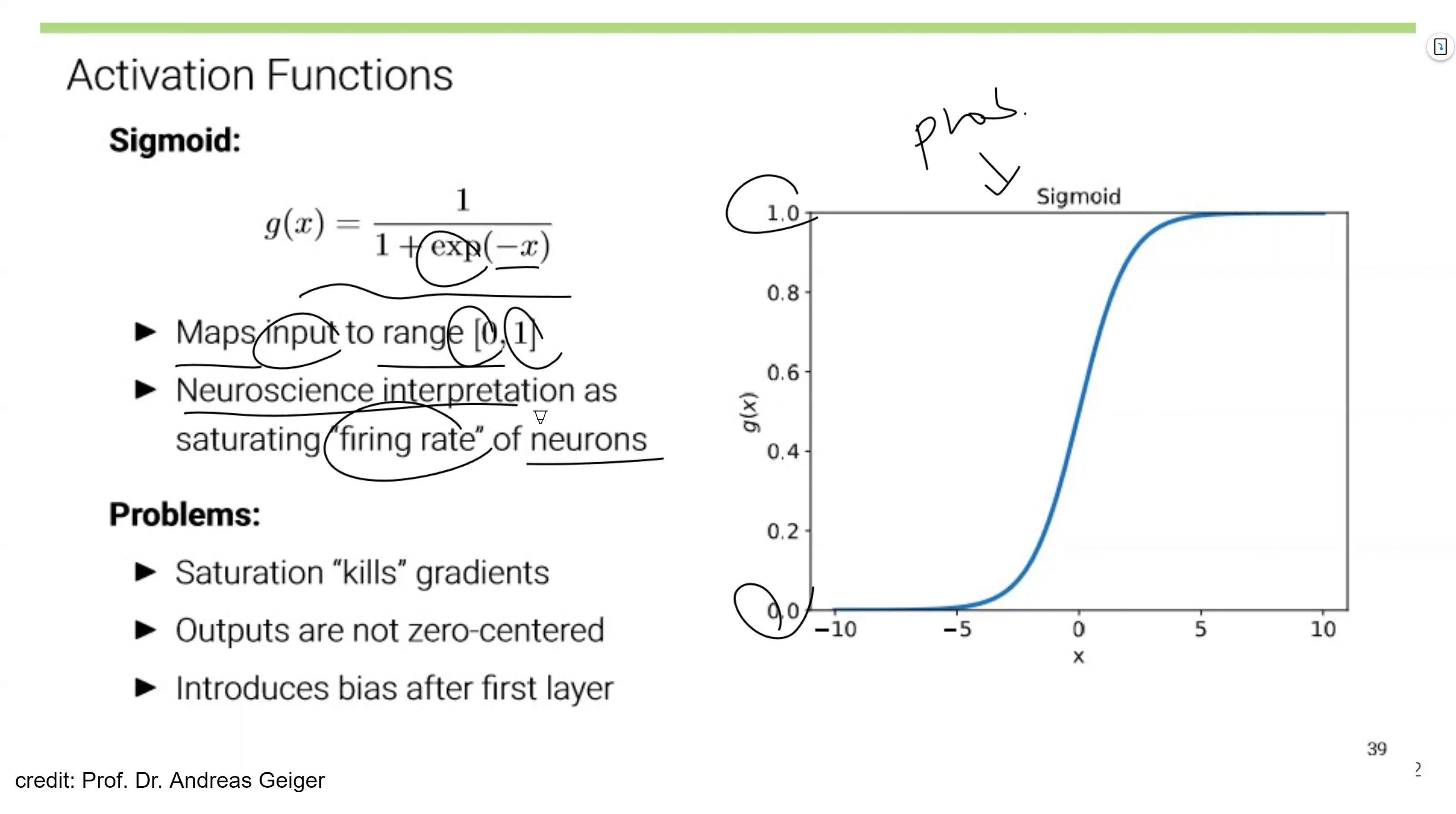However, there are some problems with the sigmoid function. The first problem is that saturation kills gradients. The slope is like 0 here and here. After this point, gradients become nearly 0, meaning that the layers will not get updated. Another problem is the output is not 0 centered or 0.5 centered. This could introduce some bias after this layer, because layers cannot have other values like negative values, but could only have values between 0 and 1.